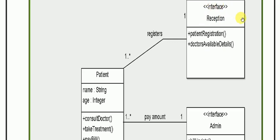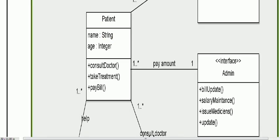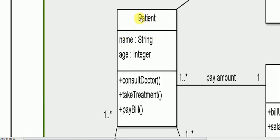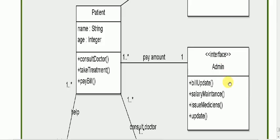In the class diagram, a class has a name, attributes, and operations. But in the case of an interface, there is only a name and operations — there are no attributes in an interface.